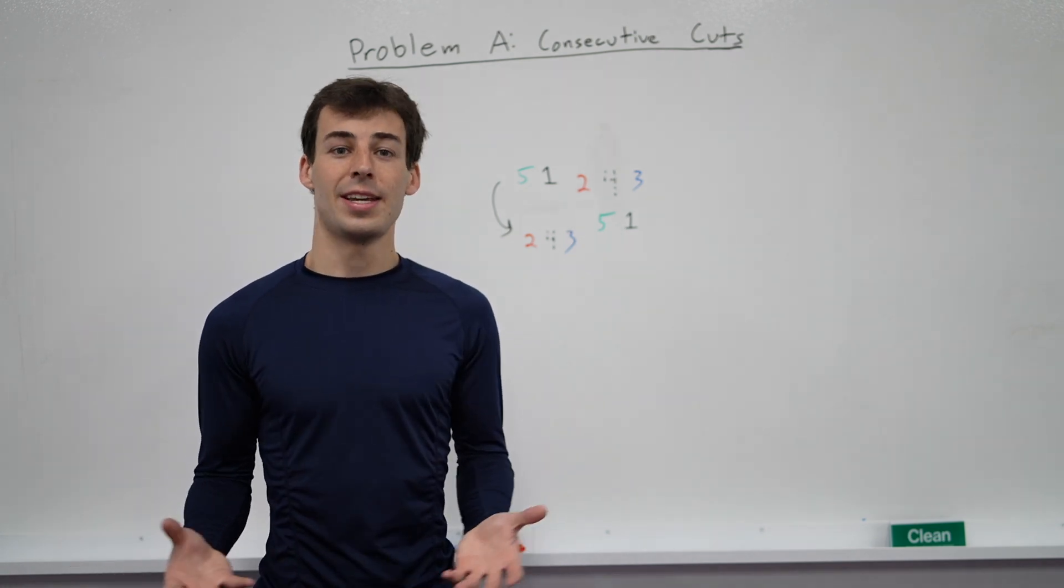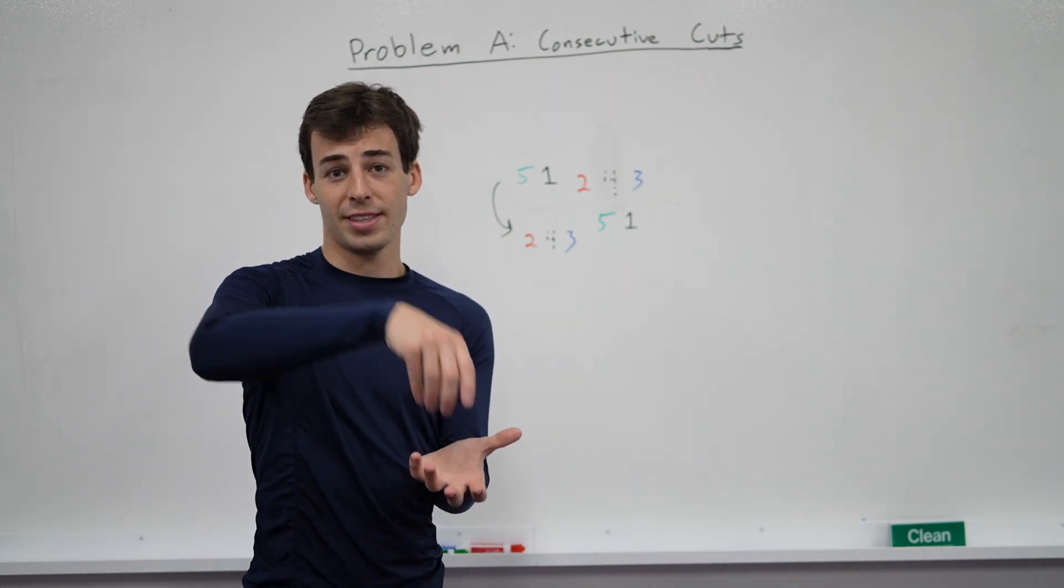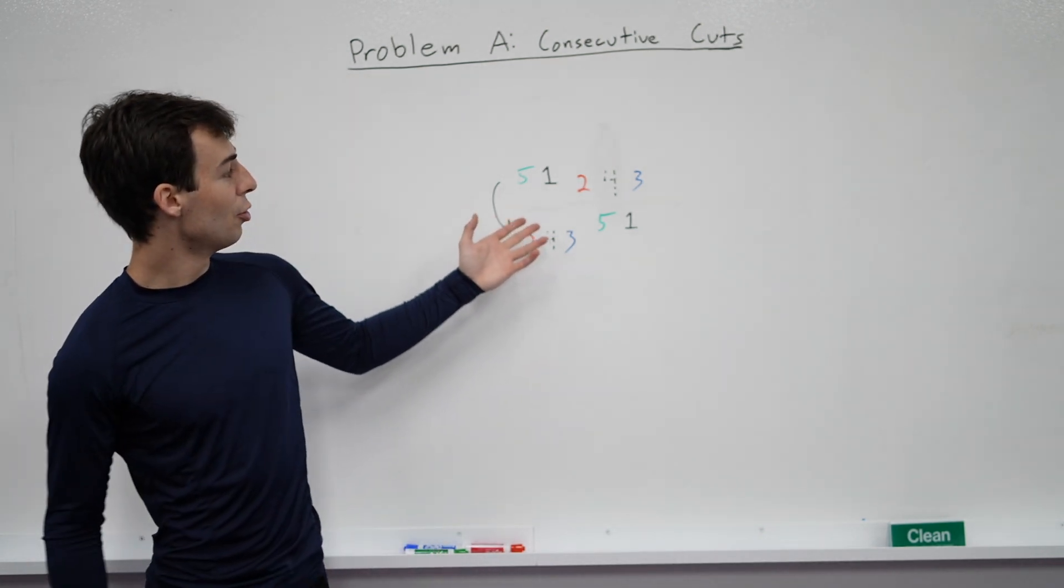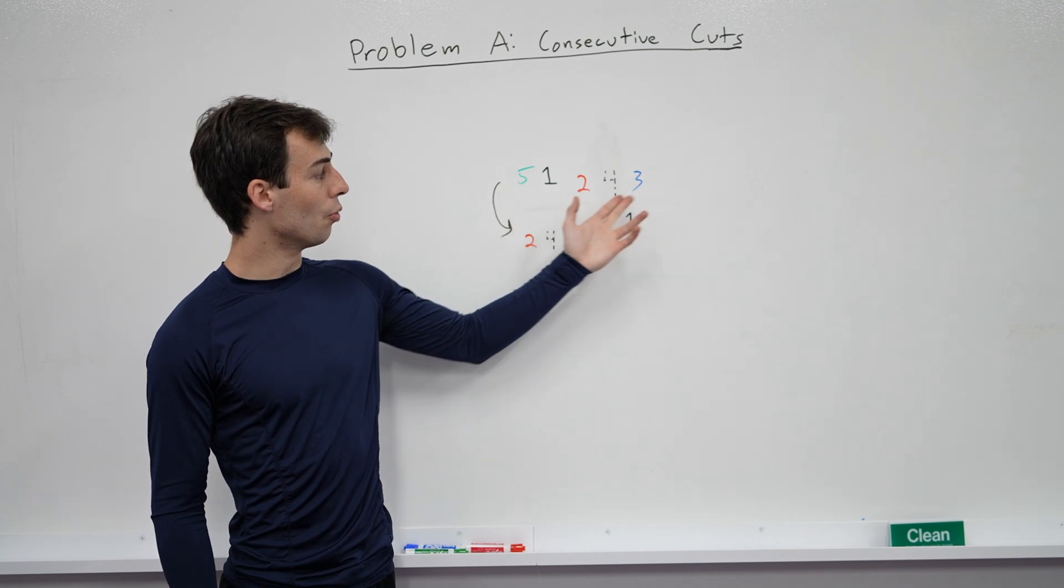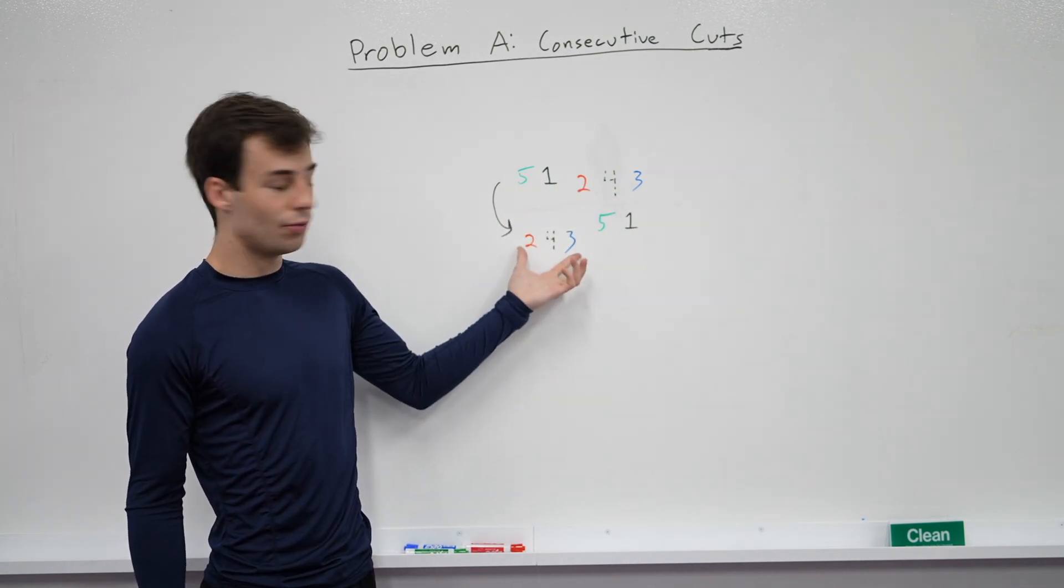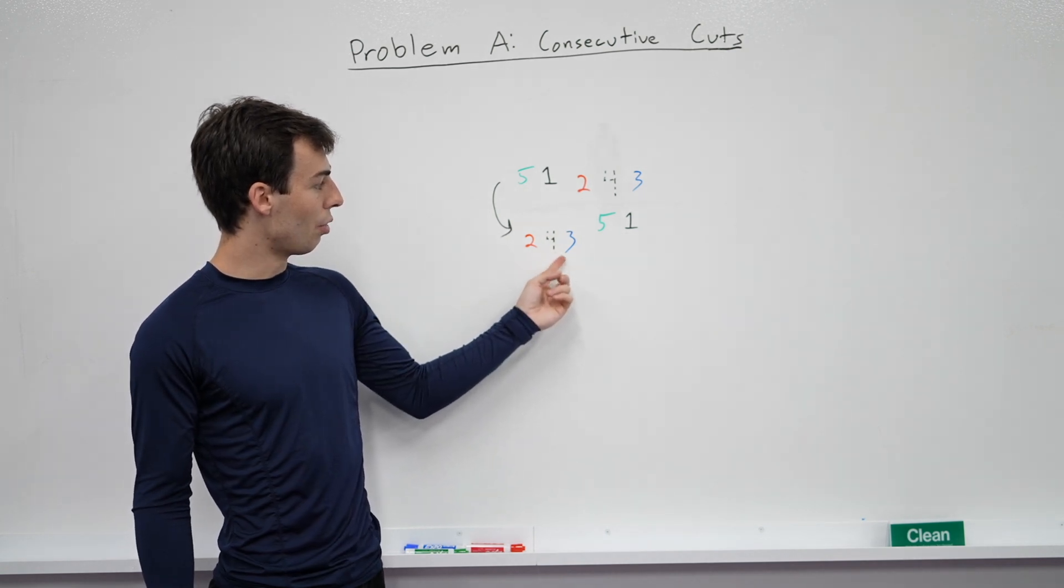A cut works just the same way as it does with a deck of cards. You take the top half off and then you put the bottom half on top of that. So as an example, if your deck of cards is 5, 1, 2, 4, 3, and you take the 5 and the 1 off, and then you put the 2, 4, 3 in the front, then it's 2, 4, 3, 5, 1.